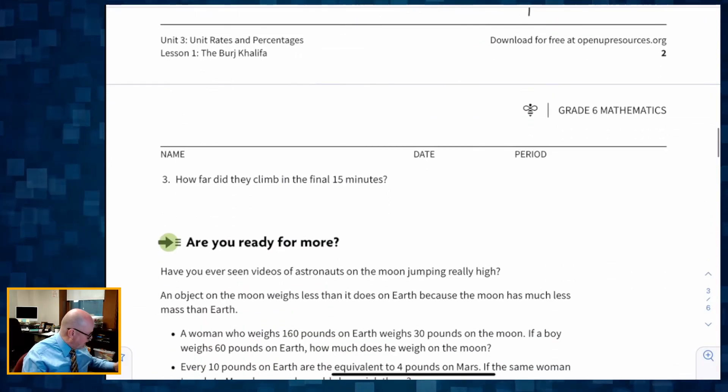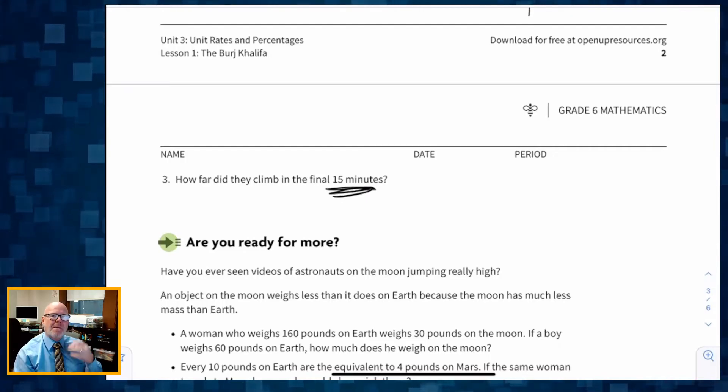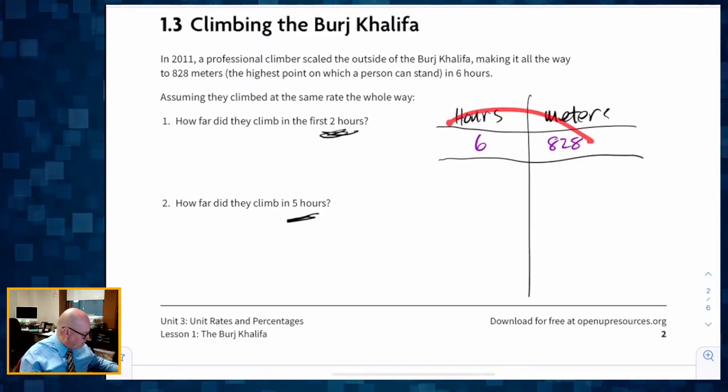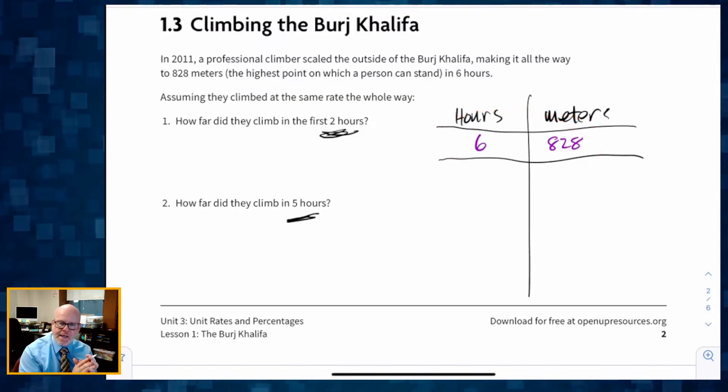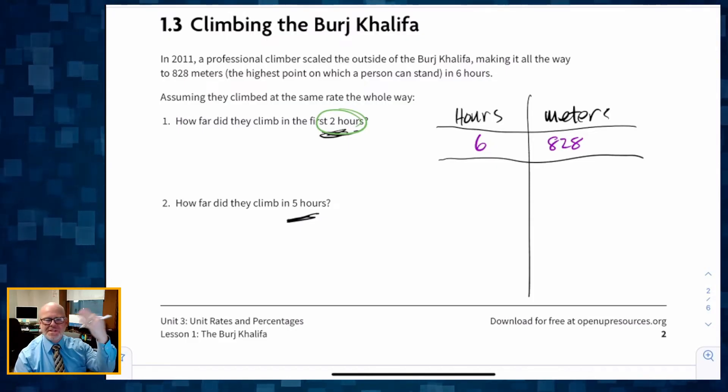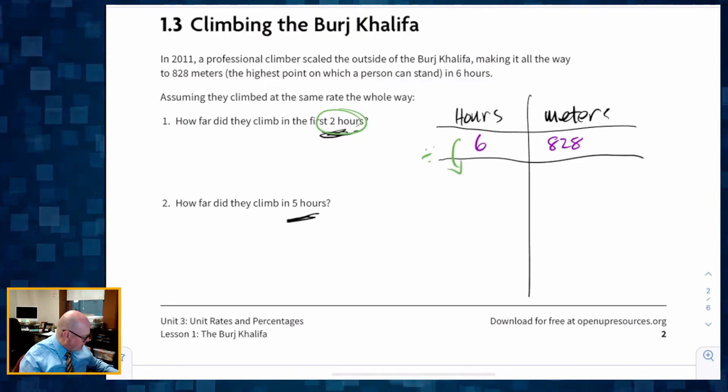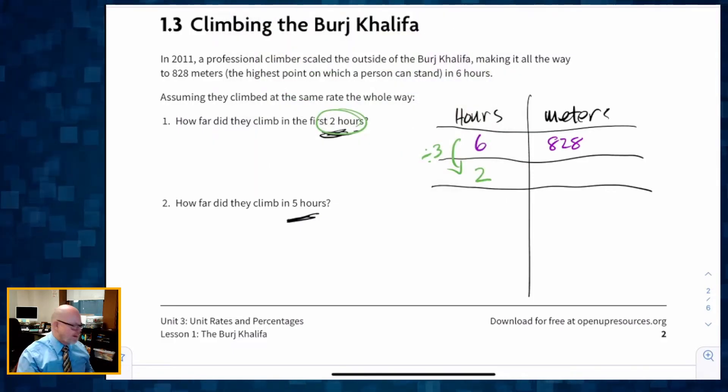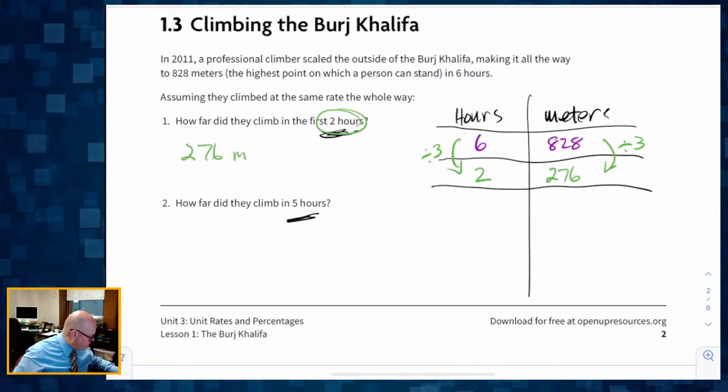How far did they climb in 15 minutes? So we have these three questions all based on this one ratio right here of six hours is 828 meters. So what I'm going to do, first thing I'm going to do, there's a variety of ways, but let's take care of the two hours. So I see a relationship between six hours and two hours, and all I have to do is divide by three. Six divided by three gives me two hours. That's what we're looking for. So I'm going to do the same thing over here. 828 divided by three gives me 276. So there it is. 276 meters is that first one.